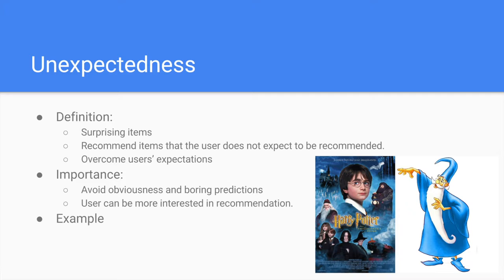Unexpectedness has received attention recently and has been mainly defined as surprise in recommendation. Unexpectedness predictions involve recommending items that the user does not expect to be recommended, in other words, surprising the users by overcoming their consumption and recommendation expectations. The importance of unexpectedness lies in avoiding boring predictions — users could be interested in recommendations that are not more of the same. For example, in an online movie streaming system, if the user watched three Harry Potter movies, recommending another Harry Potter movie is unnecessary. But a recommendation still related to the topic, such as Merlin the Wizard, could be unexpectedness to the user and worth exploring.